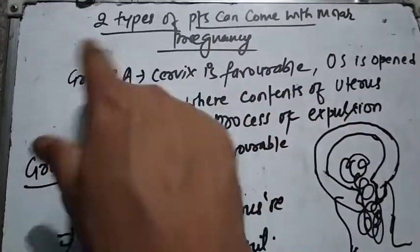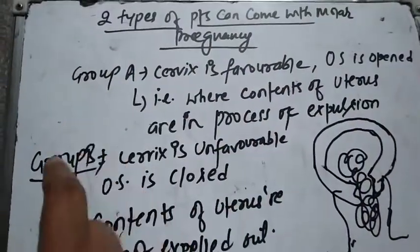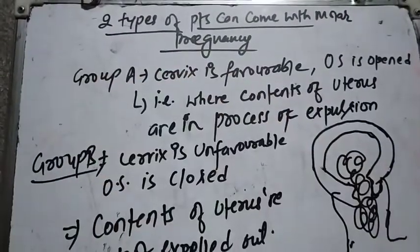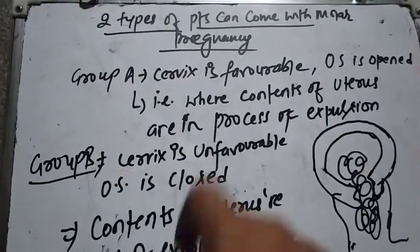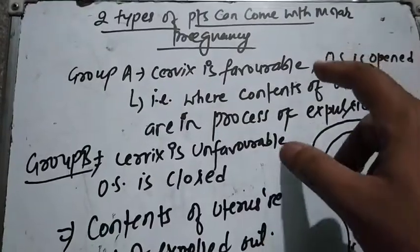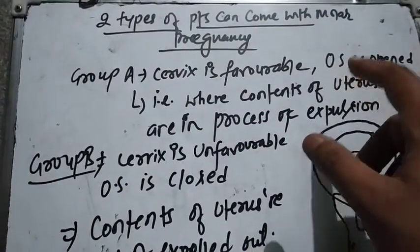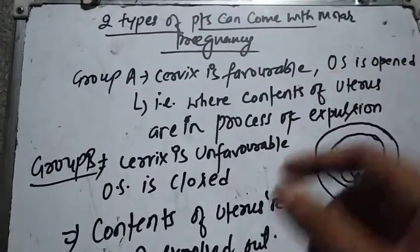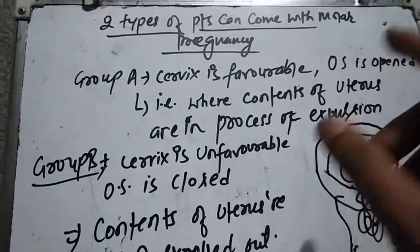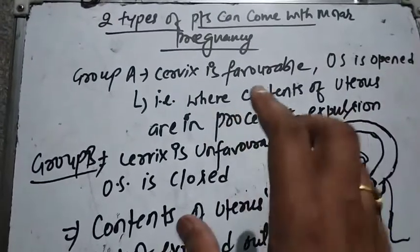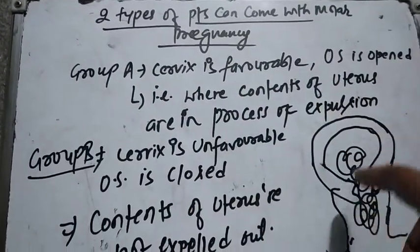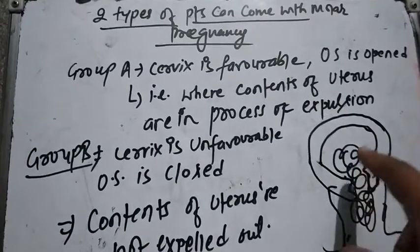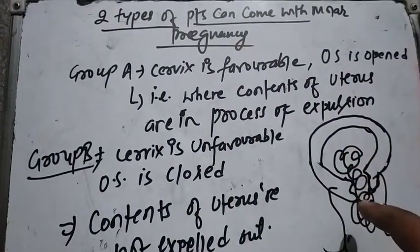These two types are Group A and Group B. In Group A, the cervix is favorable — meaning the cervix is open. It means the uterine contents are in the process of expulsion and the uterus content will be exposed through the cervix.